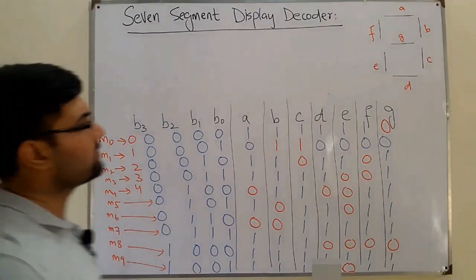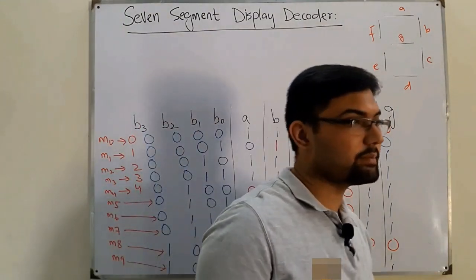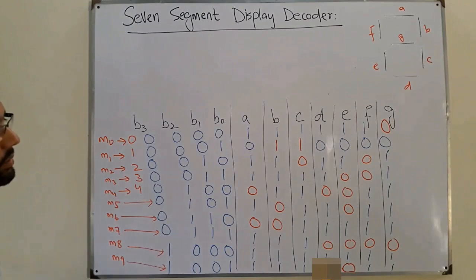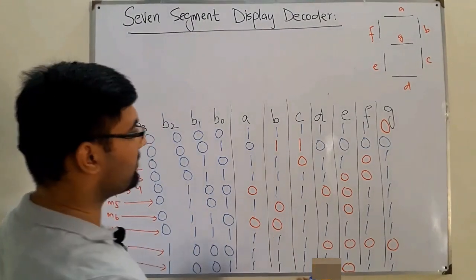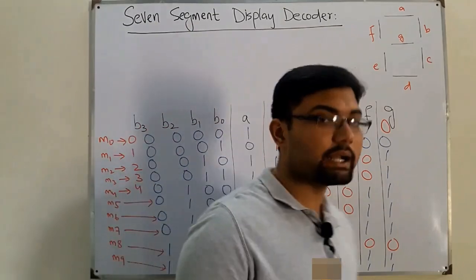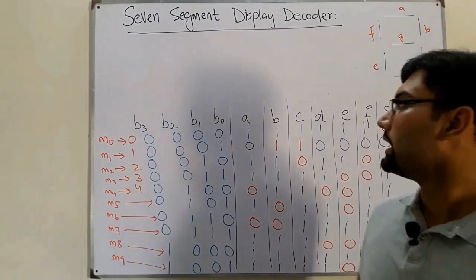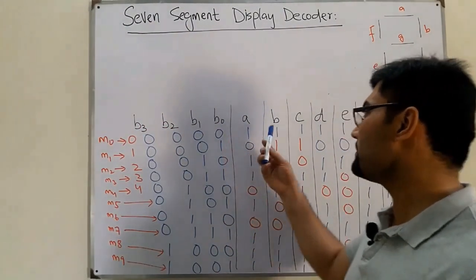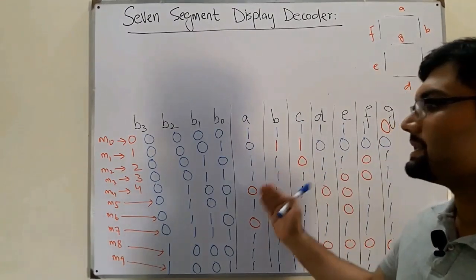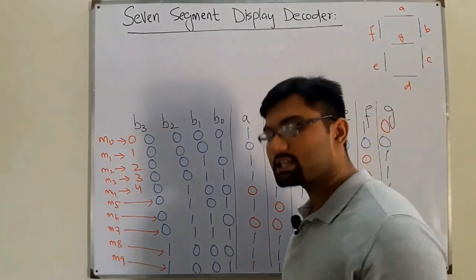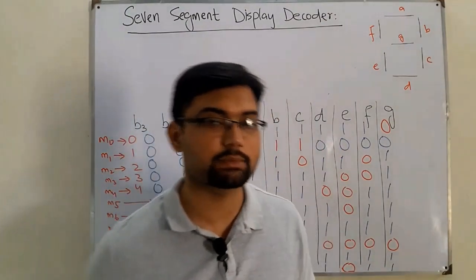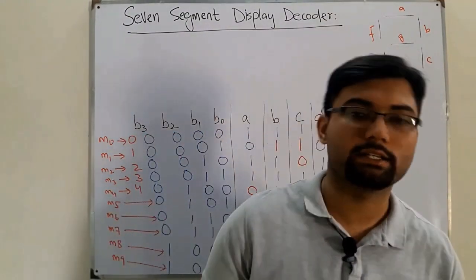I believe you have understood the basic introduction to the seven segment display decoder — which bits are on and which are off for each decimal digit. I end this part here. In the next part we will obtain the Boolean expressions for outputs a, b, c, d, e, f, and g. See you in the next part soon. Take care, goodbye.